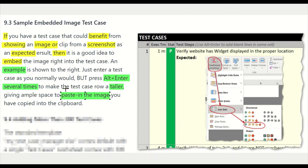There's an easy way to do it. When you're in the test case and your cursor is in the cell, just hit Alt-Enter multiple times — that makes the cell wider. When you get the cell wide enough to contain the image, hit Control-V and that pastes the image in. Then resize the image so that it fits. That's all there is to it.